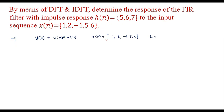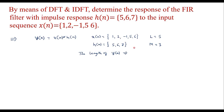Let L be the length of X(n), which is 5. Similarly, H(n) is given as {5, 6, 7}, so let the length of H(n) be M, which equals 3. We know that the length of the output sequence of linear convolution — the length of Y(n) — will be L plus M minus 1, that is 5 plus 3 minus 1, which equals 7.